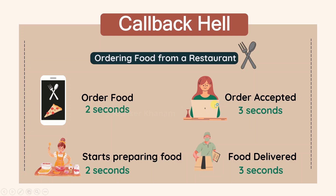If you clearly notice here, each and every step is dependent on another step. If you don't order the food, your food will not be accepted. There is no way your order will be accepted and the food will be prepared for you. Only when you order the food will your order be accepted. If your order is accepted, only then they will start with the preparation of food. If the order is not accepted, they will not start with the preparation. And this step is also dependent — if your food is prepared, only then food can be delivered. So here, each and every step is dependent on each other. Without any step, I cannot proceed with another step.